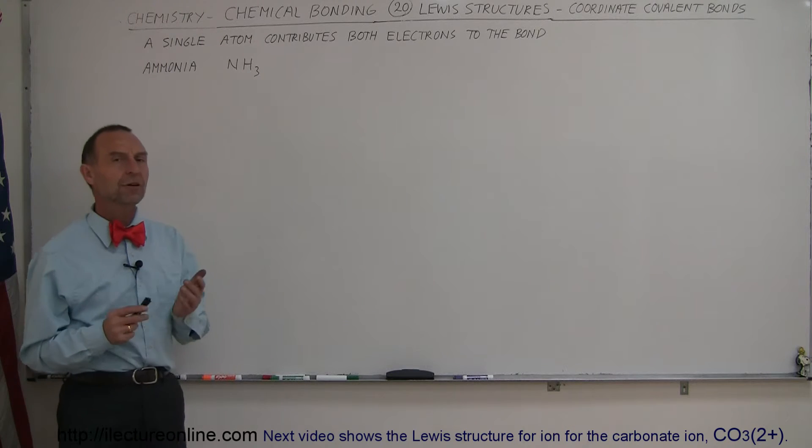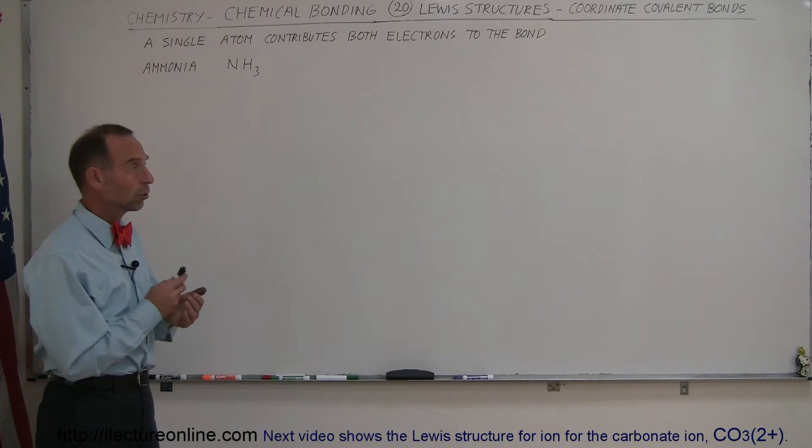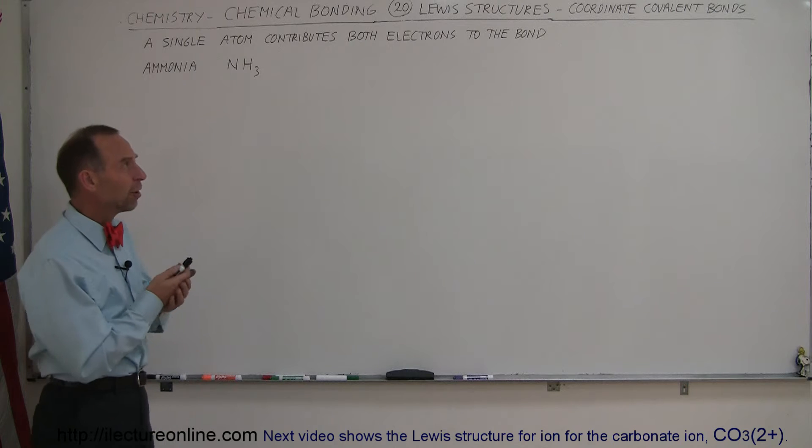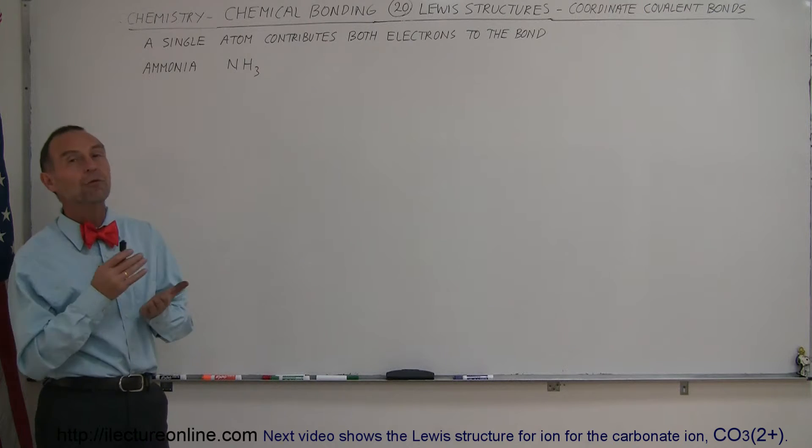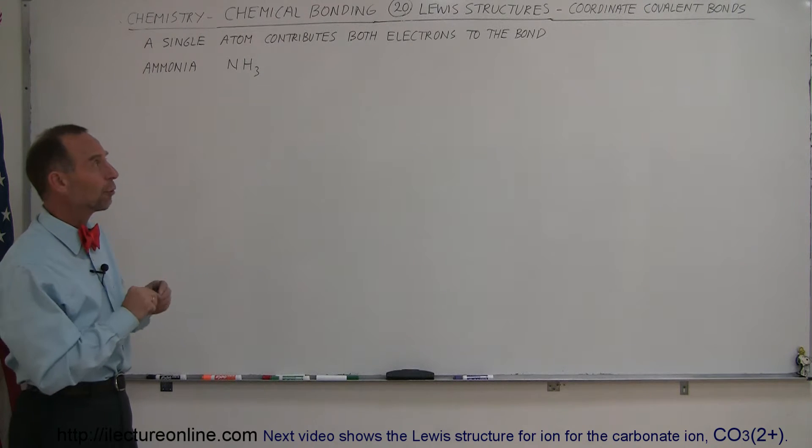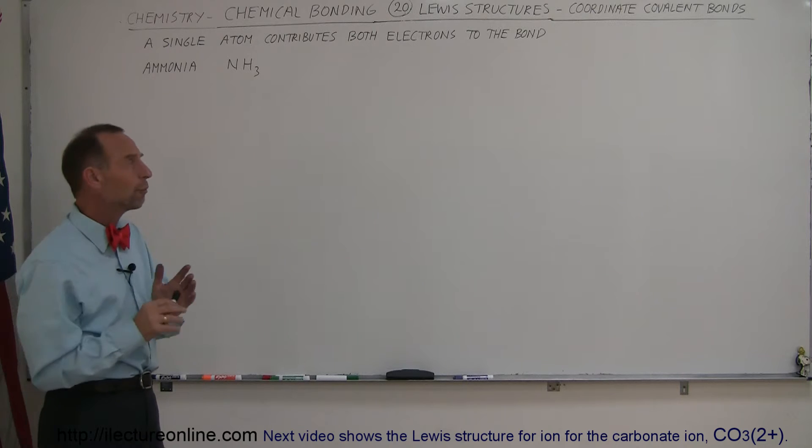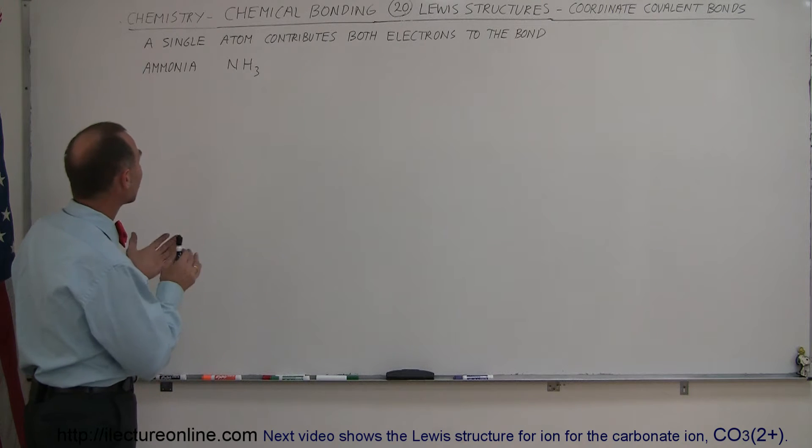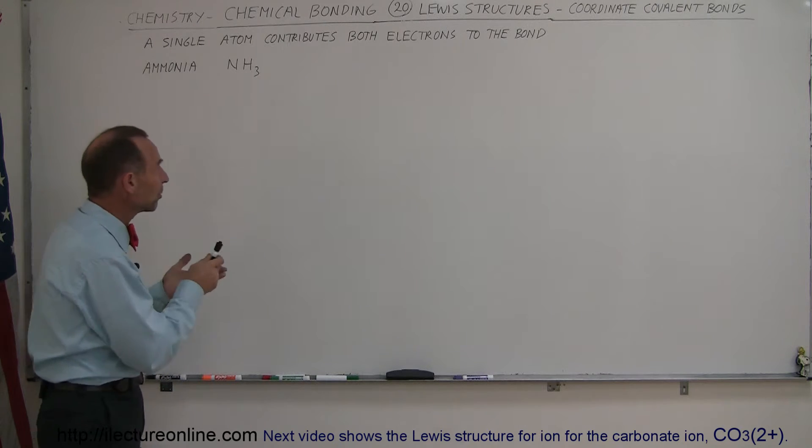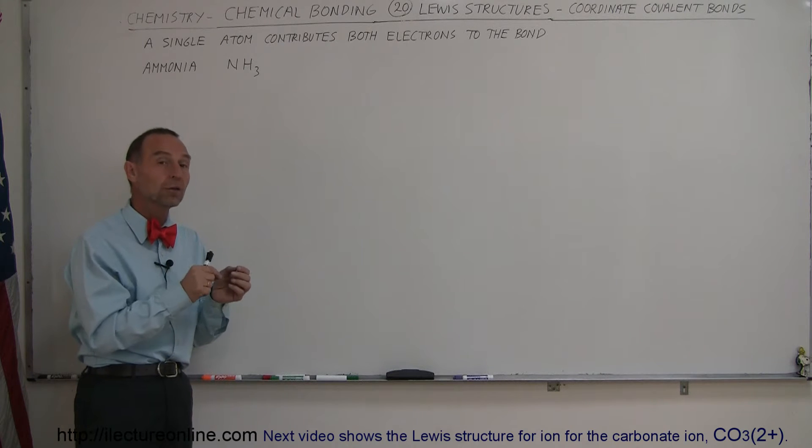And in this video, we're going to take a look at a very special type of Lewis structure. It's a Lewis structure involving a coordinate covalent bond. So what is a coordinate covalent bond? Well, a coordinate covalent bond is simply a bond in which a single atom contributes both electrons to the bond.